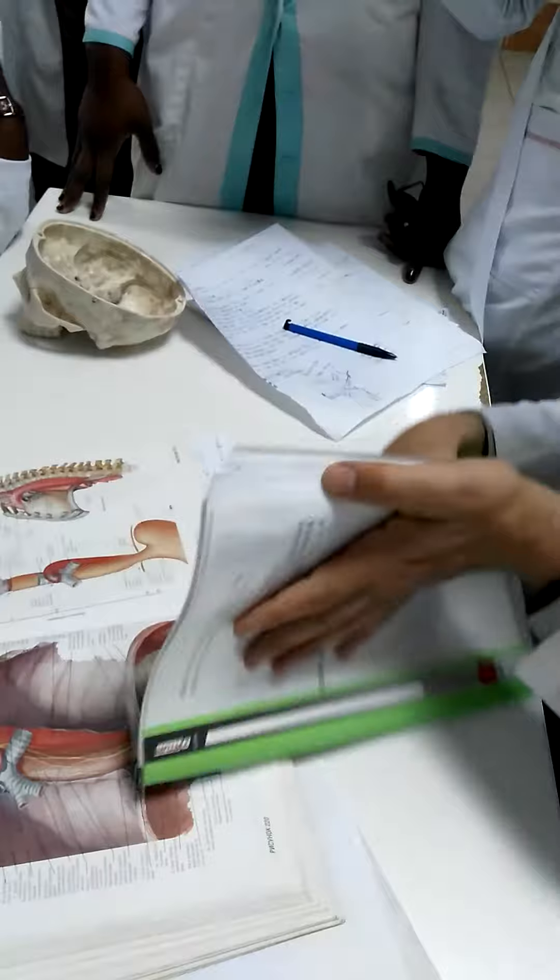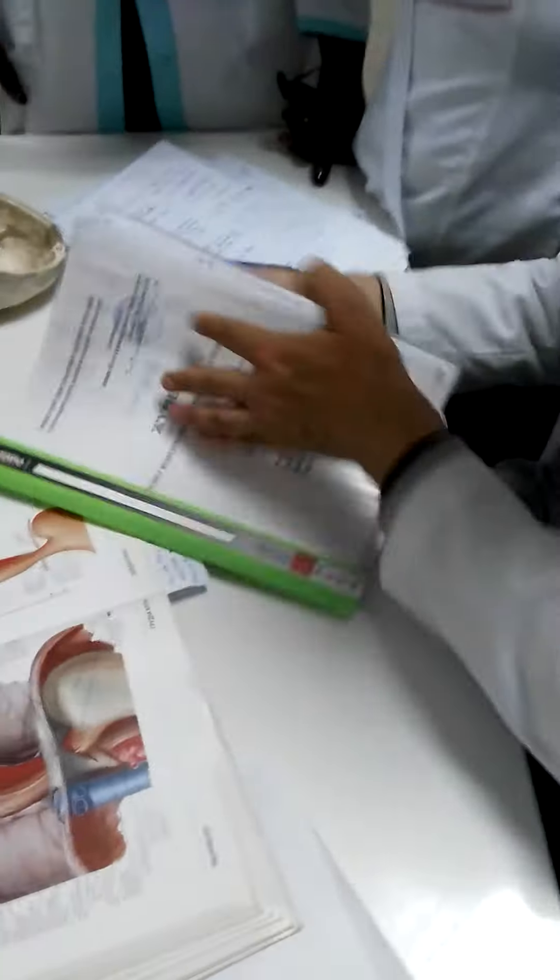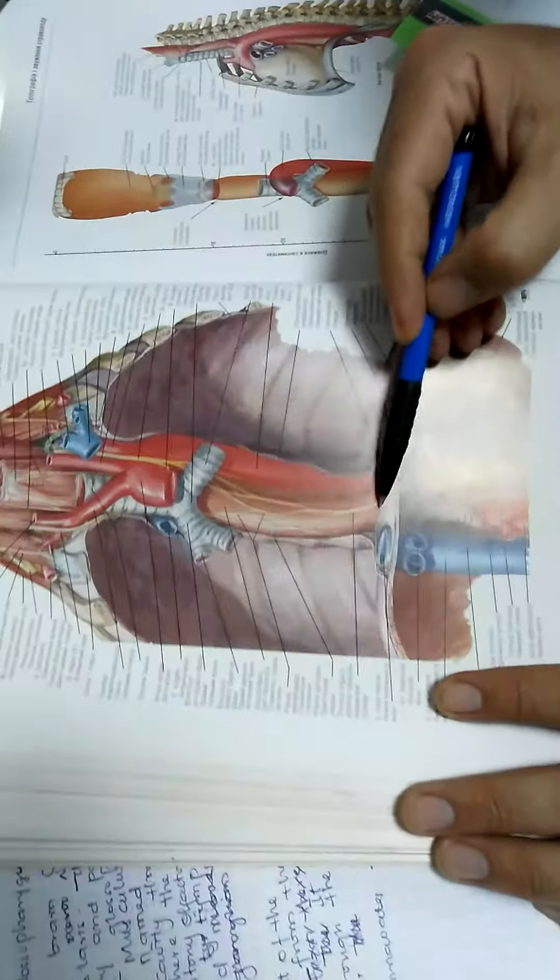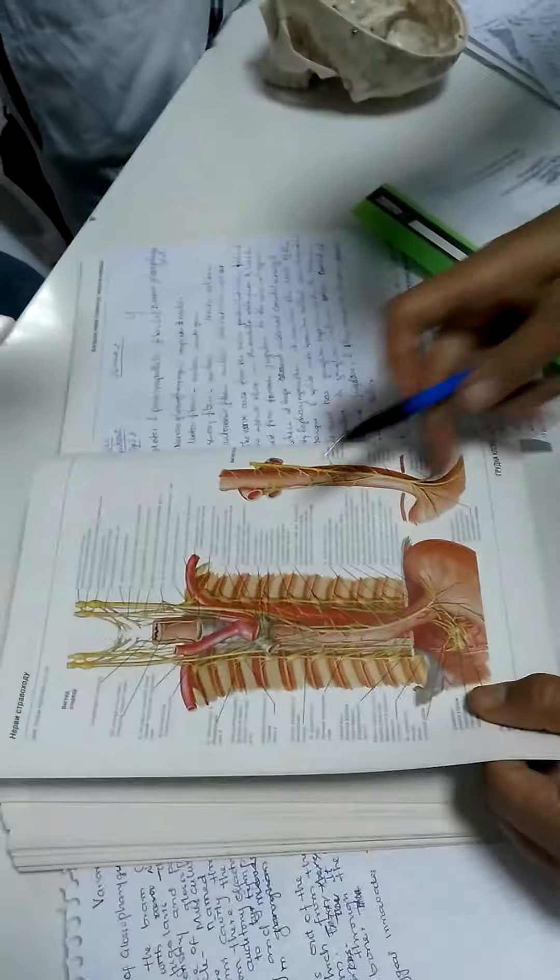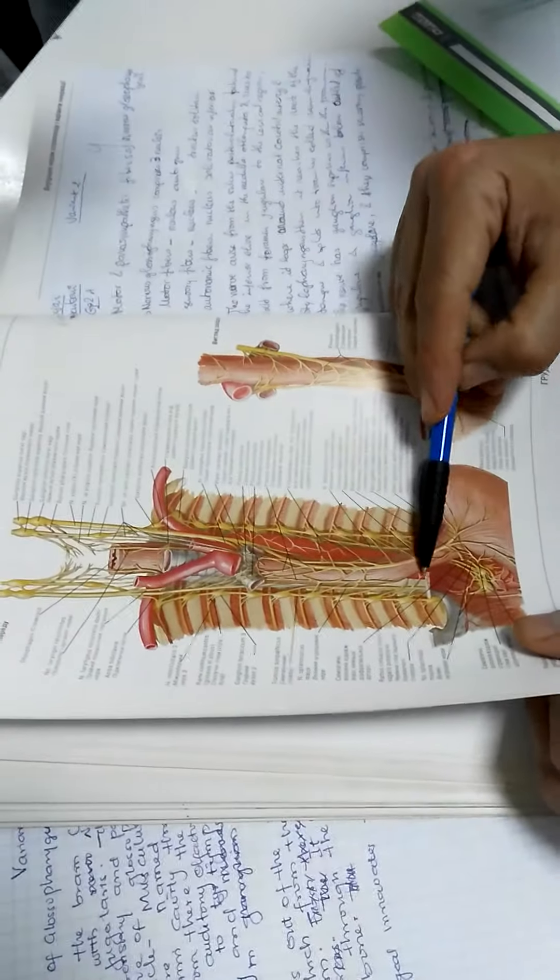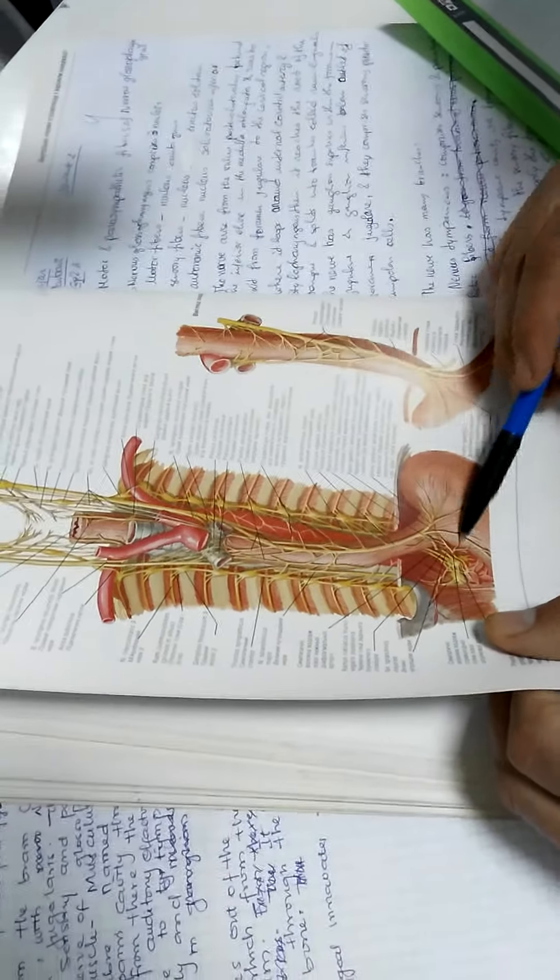The stomach rotates, the esophagus rotates, and both nervus vagus rotate. That's why nervus vagus sinister in front, nervus vagus dexter in back. Then both go to abdominal cavity through hiatus esophageus and continue with pars abdominalis.